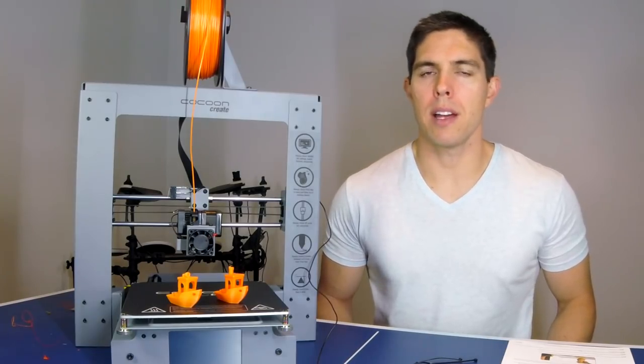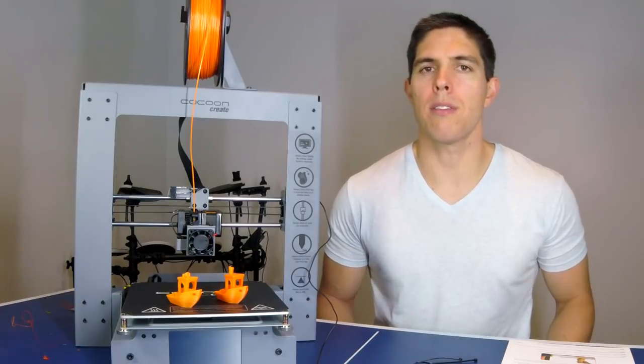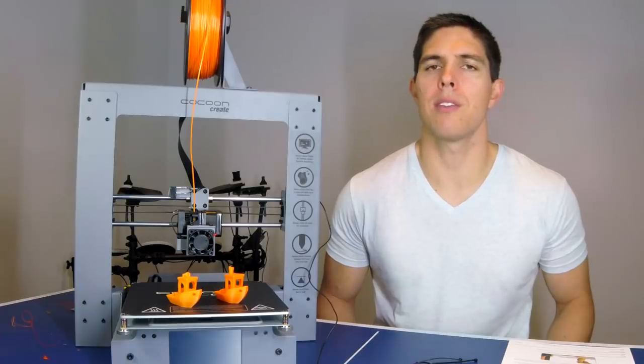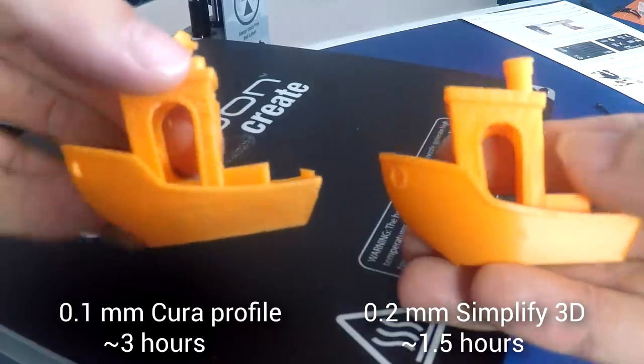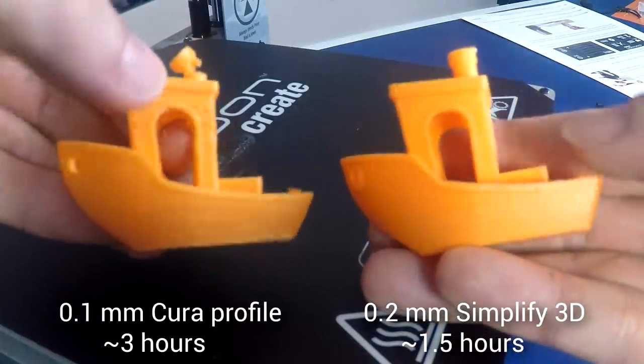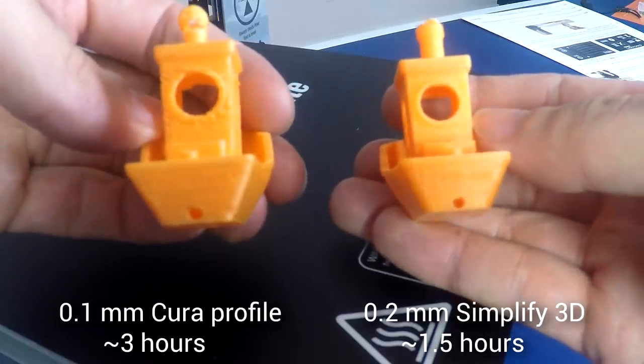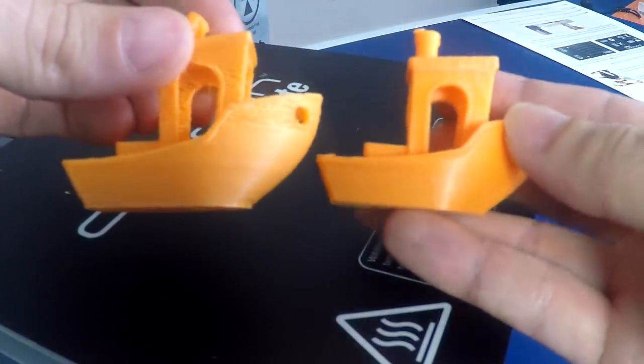So how did that print turn out? Well, not the best. Just to check that it was in fact the Cura profile, I printed a second one in Simplify 3D at 0.2mm layer height and all of the default settings there. You can see when I compare them side by side that the difference in quality is just immense. The one sliced with the dodgy profile in Cura is under extruded to the point where the shade of orange looks so much lighter. It's very frail and weak and the chimney is falling off just from handling it lightly.